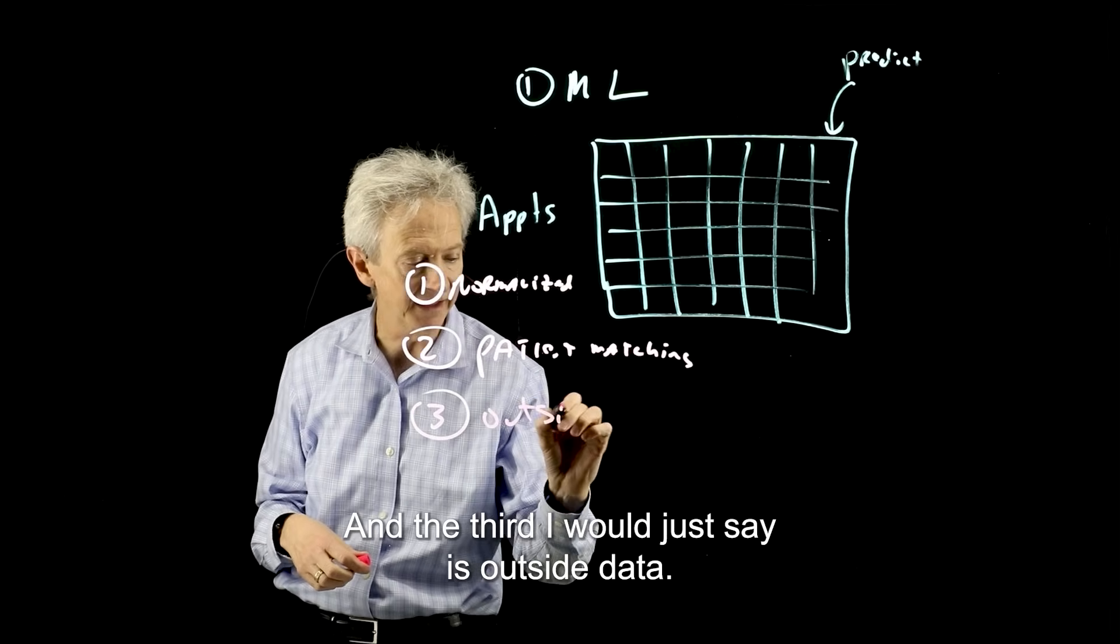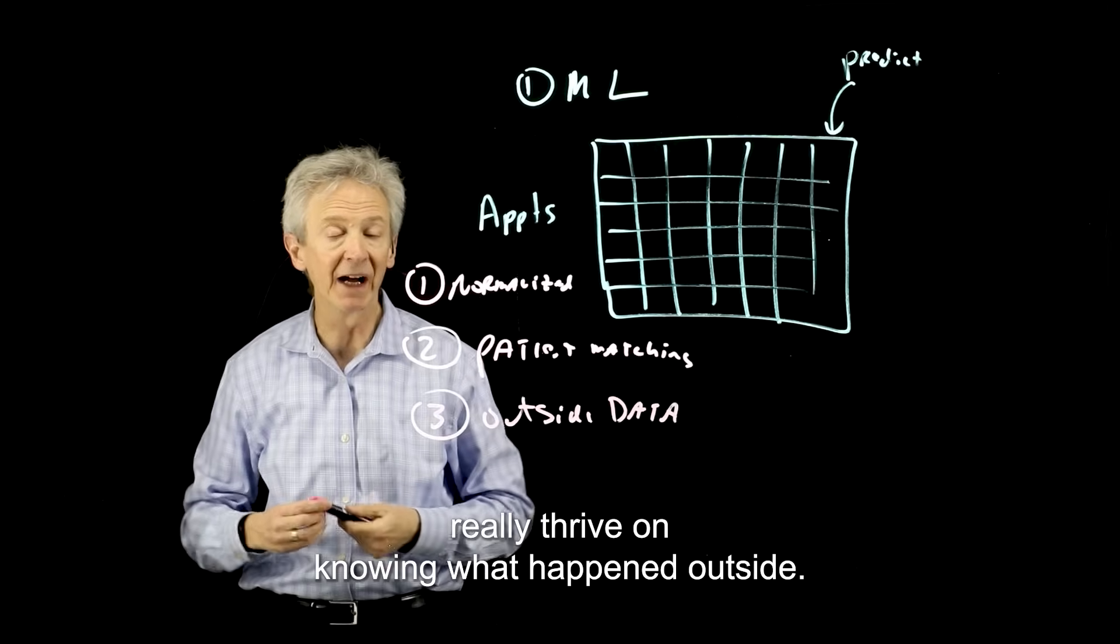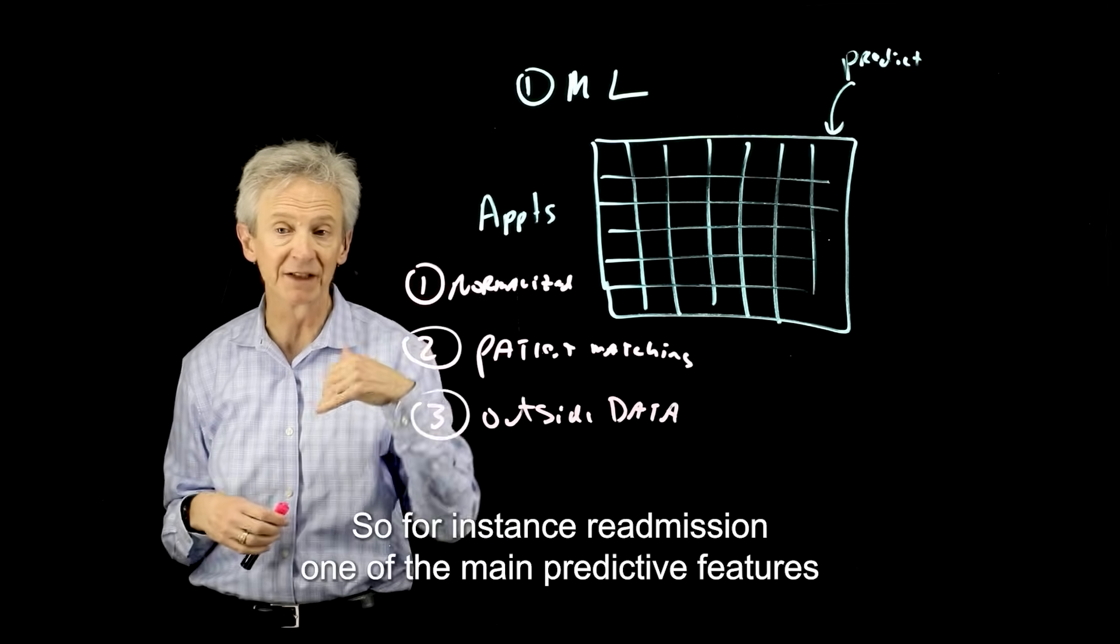And the third I would just say is outside data. Some models really thrive on knowing what happened outside. For instance, readmission.